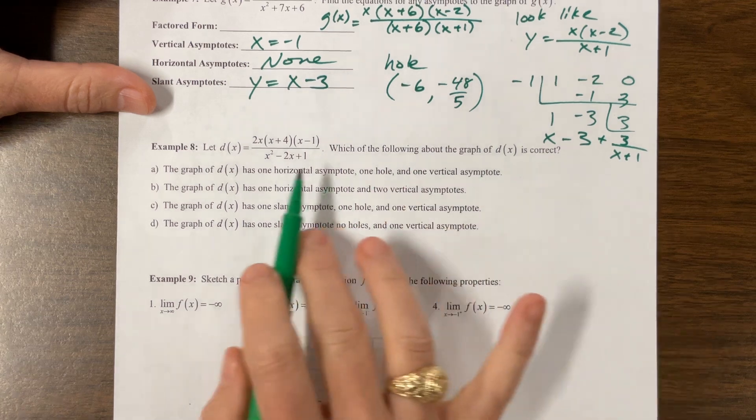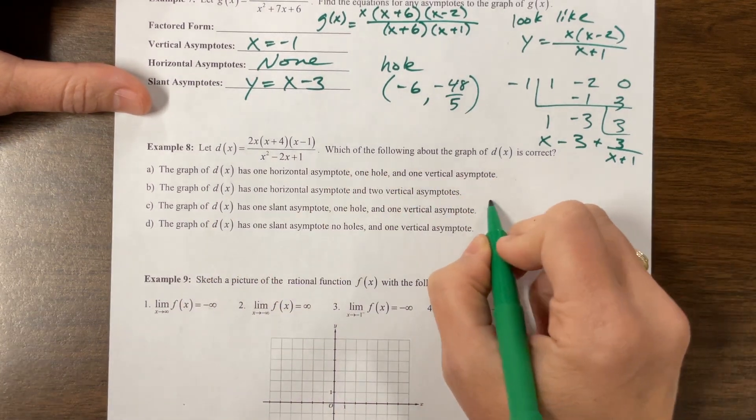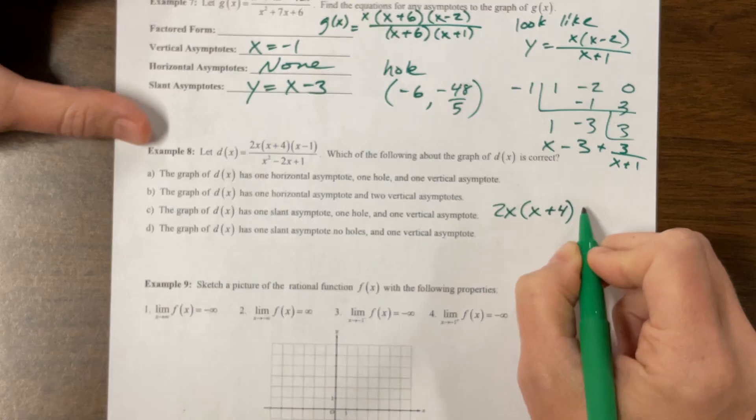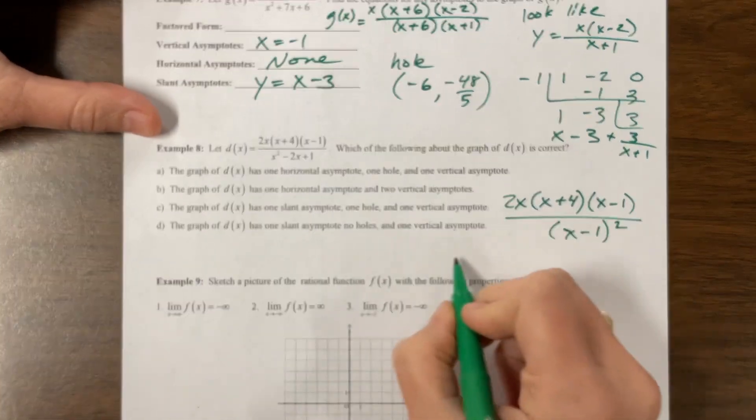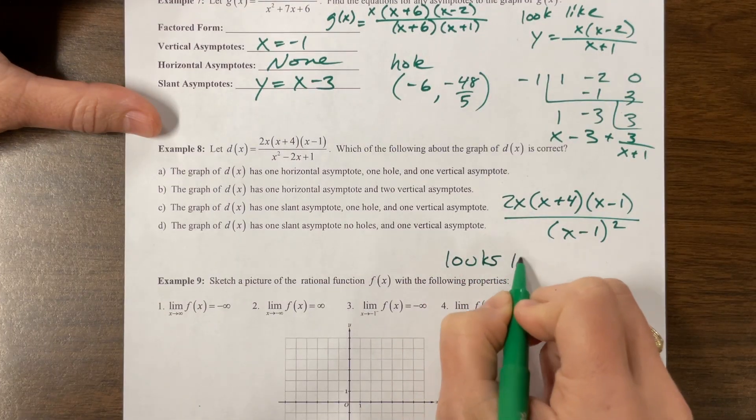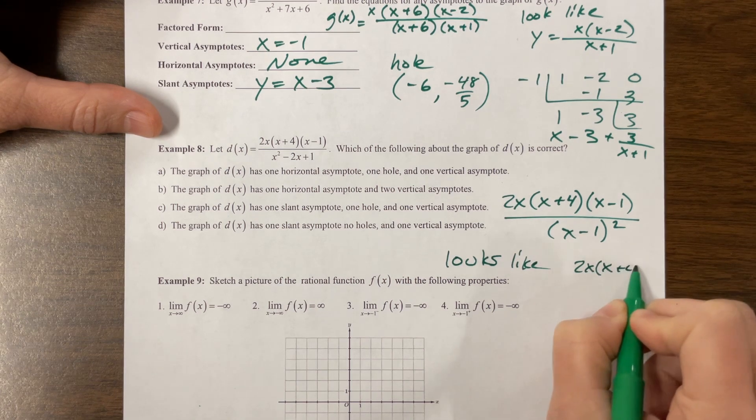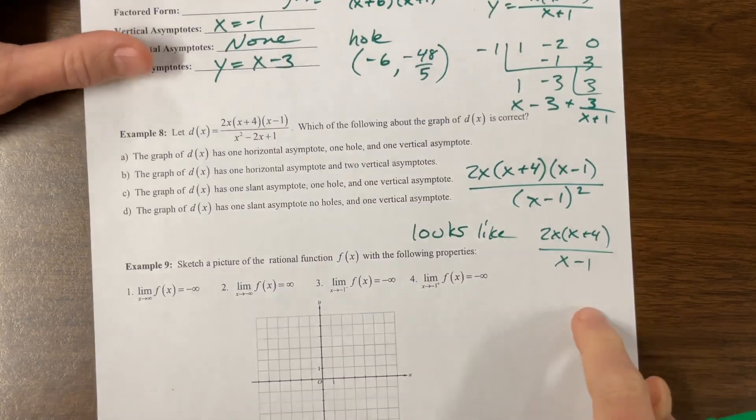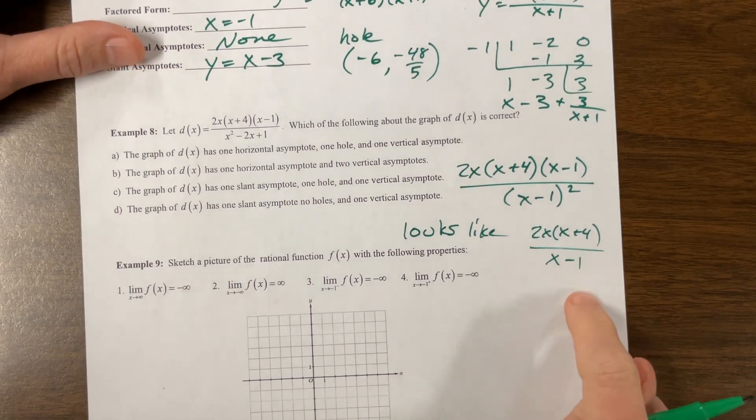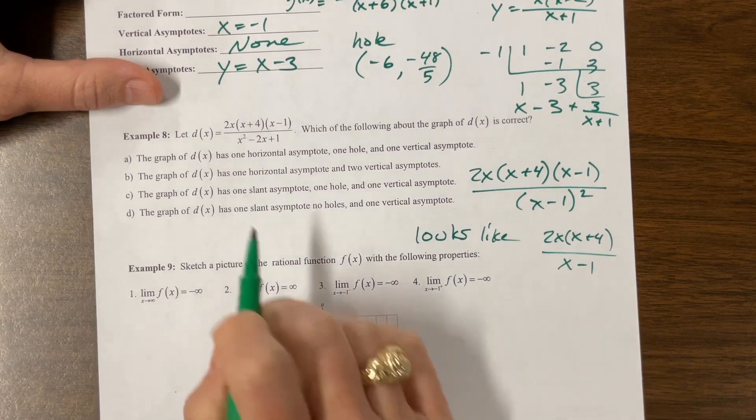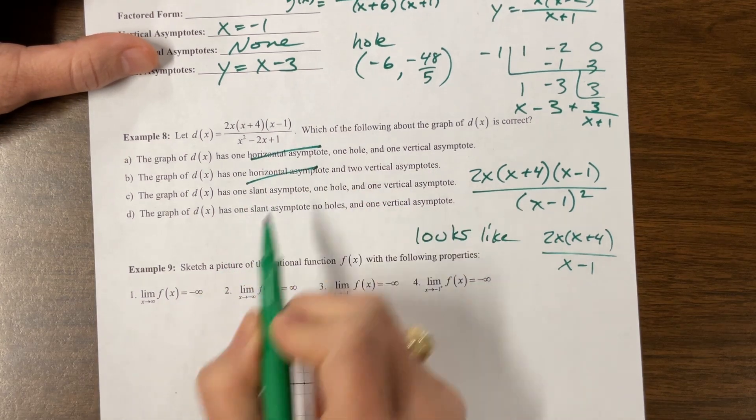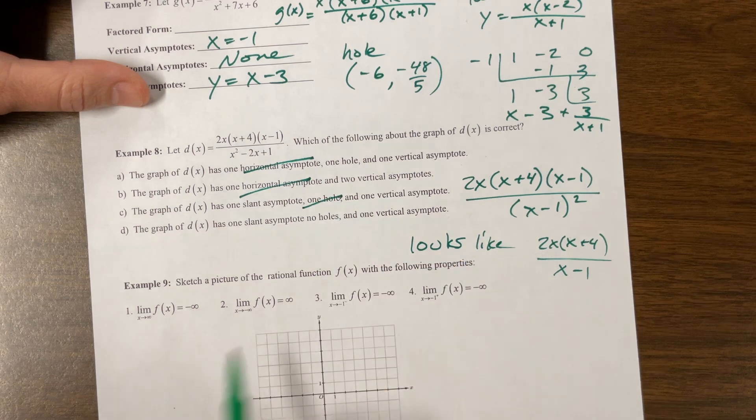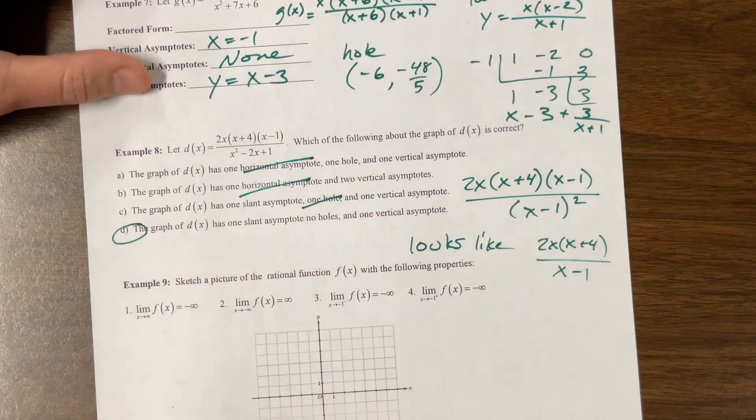Okay, which of the following of the graph is correct. The graph has one horizontal asymptote. Okay, let's factor. I see 2x times x plus 4 times x minus 1 over, this is an x minus 1 squared. Yeah, okay, so you would think, oh, it's a hole, but when you remove it, this is where I like to say, it looks like 2x times x plus 4 over the x minus 1 that's left. Well, this is an asymptote. So the hole doesn't really matter. The asymptote trumps the hole. Has one horizontal asymptote? Nope, because it's top heavy. So it has a slant asymptote. So we can get rid of the horizontal choices. One hole? Nope. It has no hole because it was, so it's one vertical asymptote. There we go.